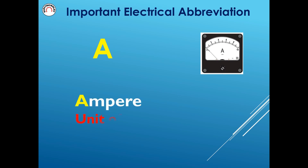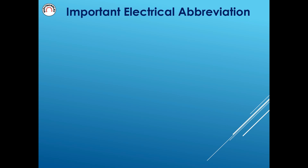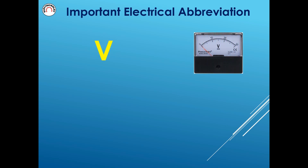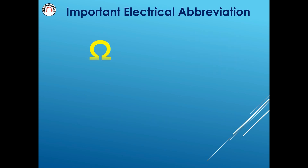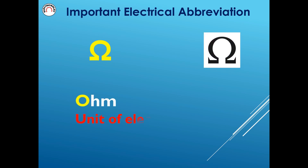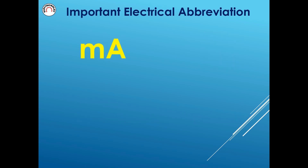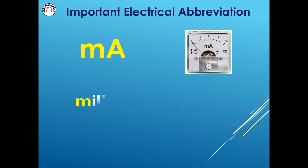A: Ampere — unit of electrical current. V: Volt — unit of electrical voltage. Ω (Ohm): Unit of electrical resistance. mA: Milliampere.